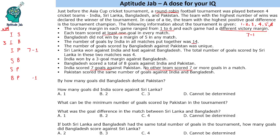For the India vs Bangladesh match, India won by a 3-goal margin, so there are three possibilities: India can win 4-1, 5-2, or 6-3.